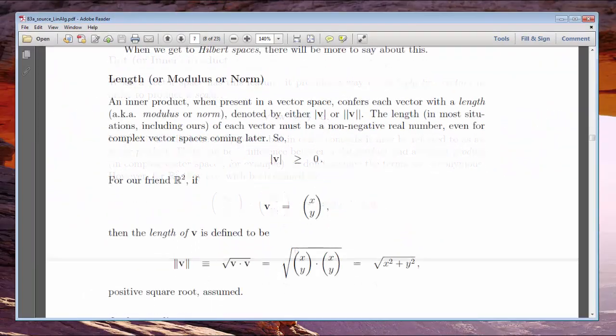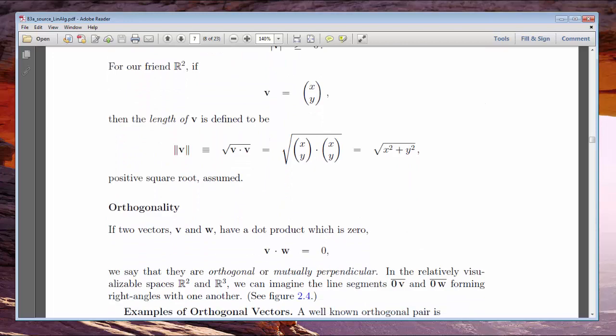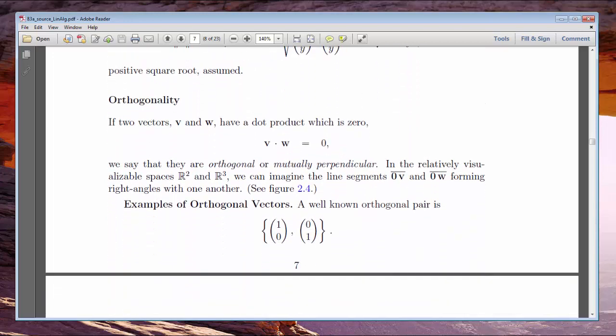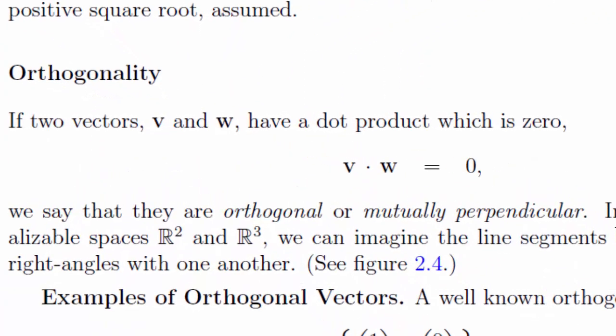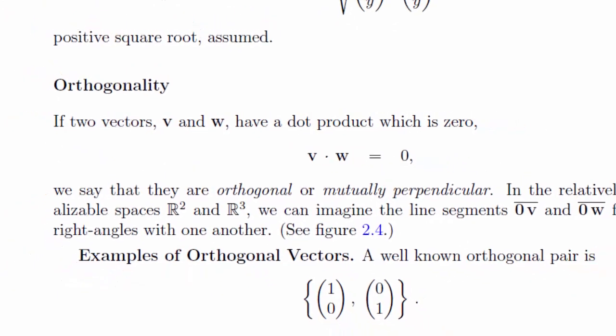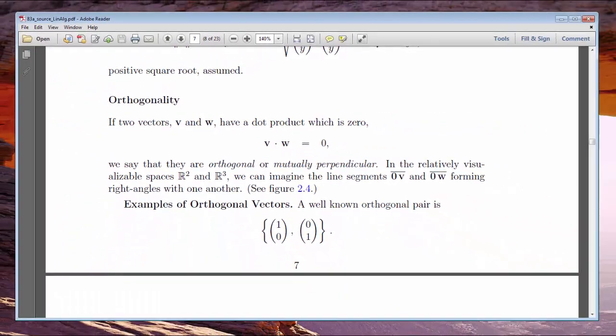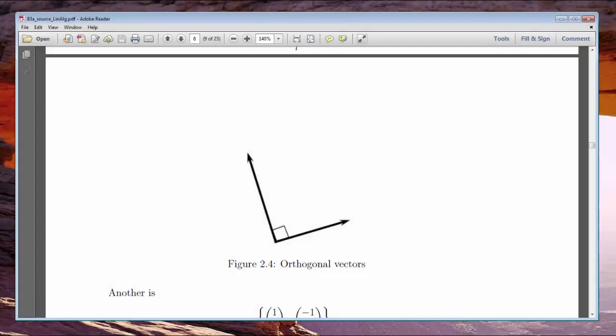Once you learn what a dot product is, I can show you how it's used to measure the lengths of vectors. Dot products give us a second concept, too, this one called orthogonality. We'll learn what it means for two vectors to be orthogonal and get a visual for this idea that suggests orthogonality is closely related to the property of being perpendicular.